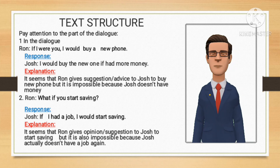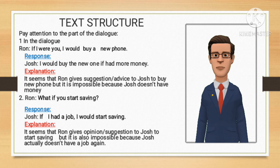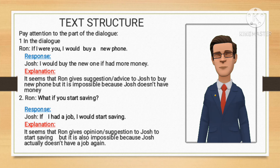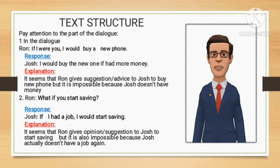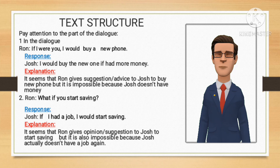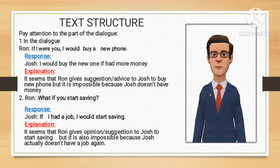In the dialogue, Ron says: 'What if you start saving?' And Josh gives a response: 'If I had a job, I would start saving.' From the dialogue it seems that Ron gives an opinion or suggestion to Josh to start saving, but it is also impossible because Josh doesn't have a job.